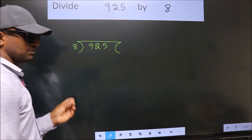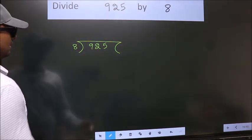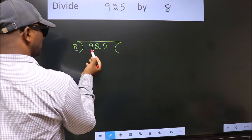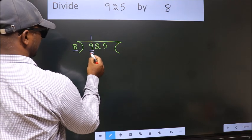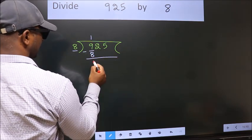This is your step 1. Next, here we have 9. Here 8. A number close to 9 in the table is 8 once 8. Now we should subtract. We get 1.